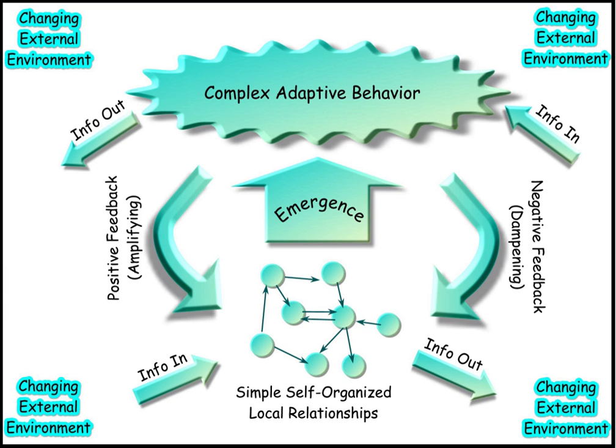The term complex adaptive systems, or complexity science, is often used to describe the loosely organized academic field that has grown up around the study of such systems. Complexity science is not a single theory — it encompasses more than one theoretical framework and is highly interdisciplinary, seeking the answers to some fundamental questions about living, adaptable, changeable systems.